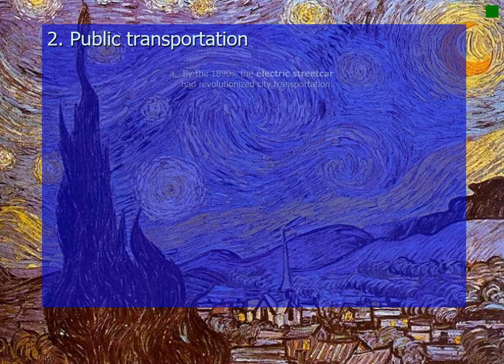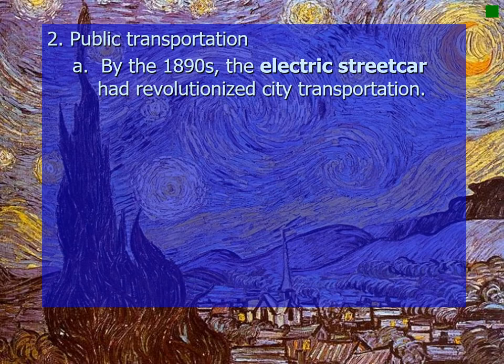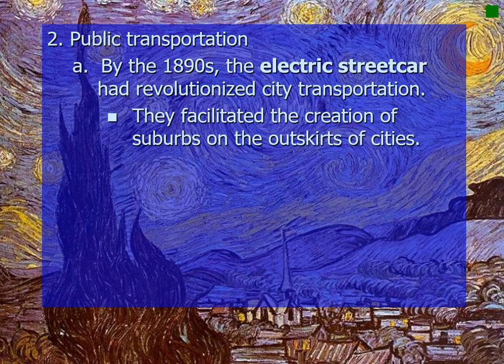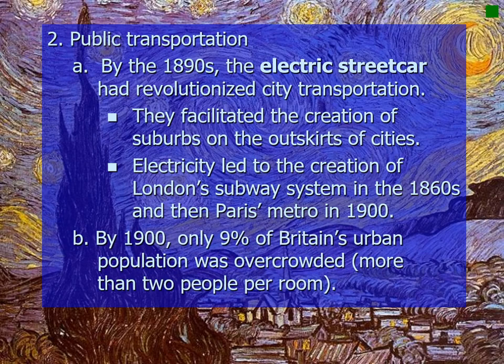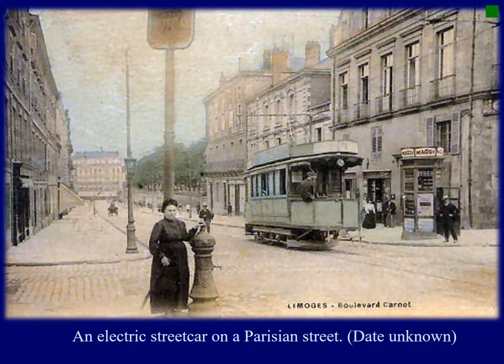Regarding public transportation: by the 1890s, the electric streetcar had revolutionized city transportation and facilitated the creation of suburbs on the outskirts of cities. Electricity led to the creation of London's subway system in the 1860s and Paris's Métro in 1900 — both still in use today. By 1900, only 9% of Britain's urban population was overcrowded — more than two people per room — rather than the ten people per room seen earlier.